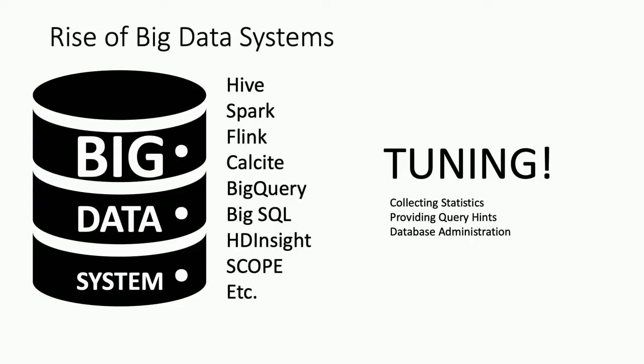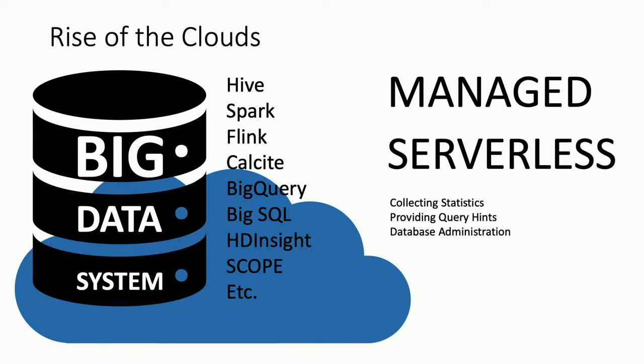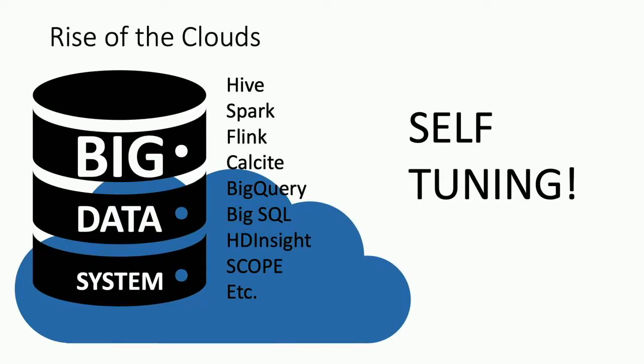People normally do things like collect statistics or provide query hints — for example in SQL Server, add a row count hint, or apply database administration. There's also been a rise in Cloud offerings, where systems are offered as managed or serverless services. This means end users have no control and can't apply these kinds of tunings anymore. They may not have admin access or expertise, and they don't even have control because it's a managed service. So the systems have to self-tune — there's no other option.